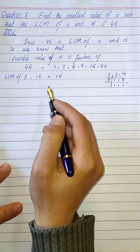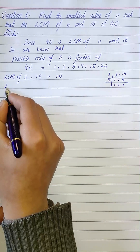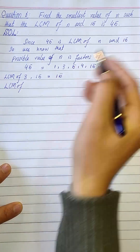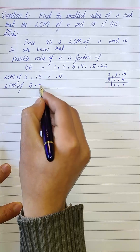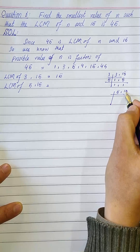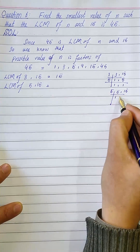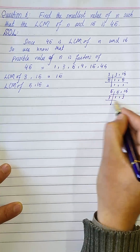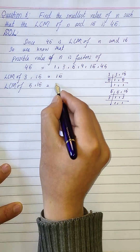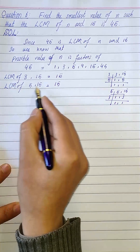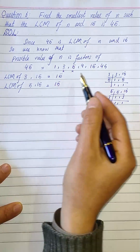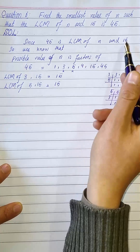Next, we check LCM(5, 15). We have 5 times 1 is 5, and 5 times 3 is 15, so the LCM is 5 times 3 which equals 15. The LCM of 5 and 15 is also 15, so 5 is not a valid answer either.